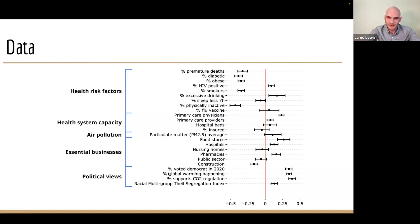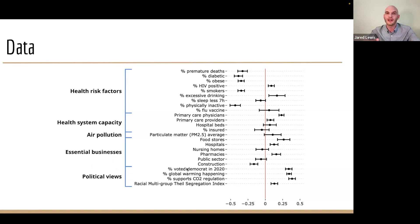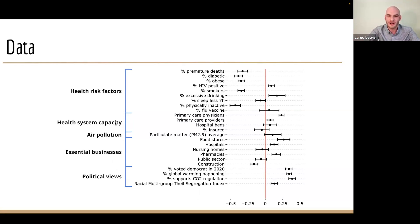We want to control for — or at least allow the potential to control for — the percent voting Democrat in 2020, because we don't want our results to be clouded by how many people are actually Democrat. We want to look at political segregation. Racial segregation also ended up in here, though it would more appropriately be under demographics.